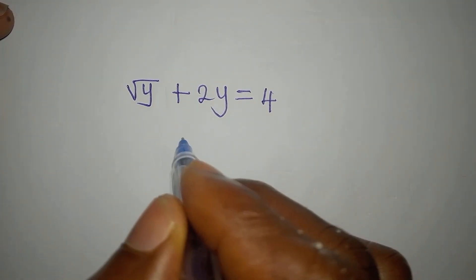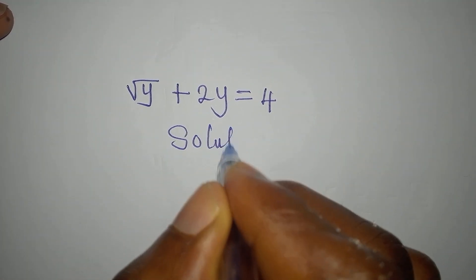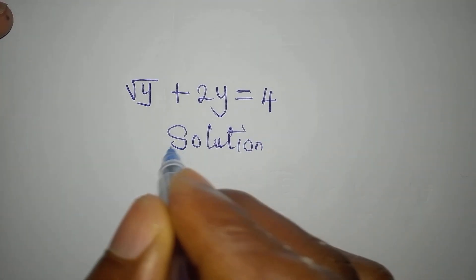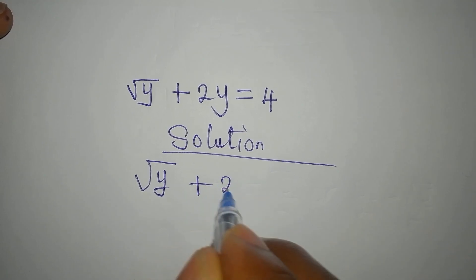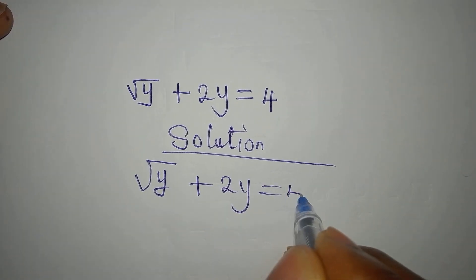Hi everyone, let's provide the solution to this equation: square root of y plus 2y equals 4.